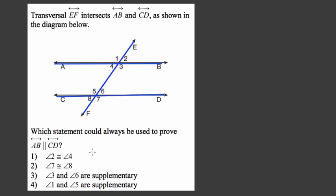So with these choices, all you're looking for is a choice that reflects something you always know when you have a transversal crossing two parallel lines. For example, two and four is not going to be the answer, because two and four, those are vertical angles, those are always going to be equal, whether or not you have parallel lines.